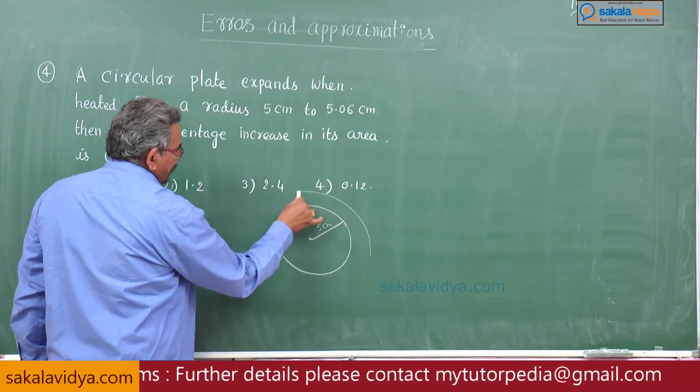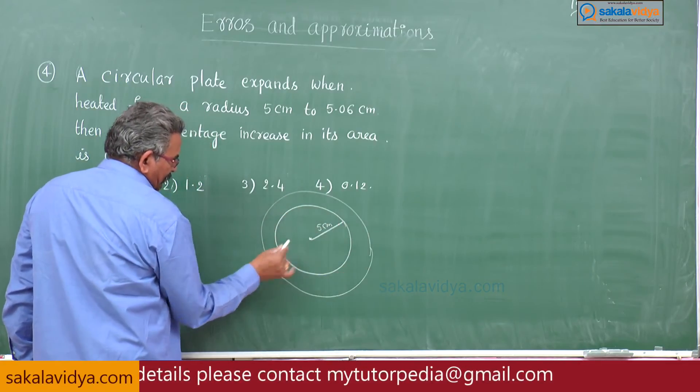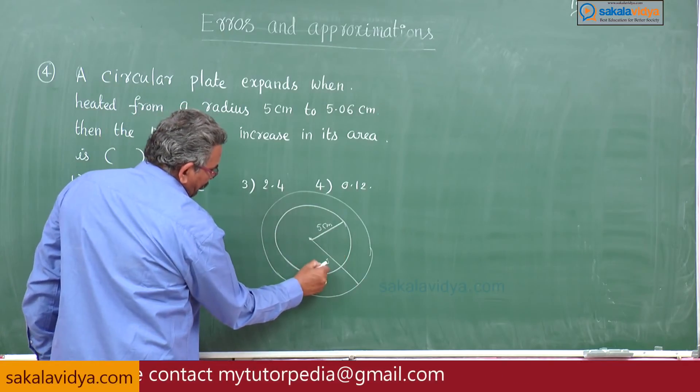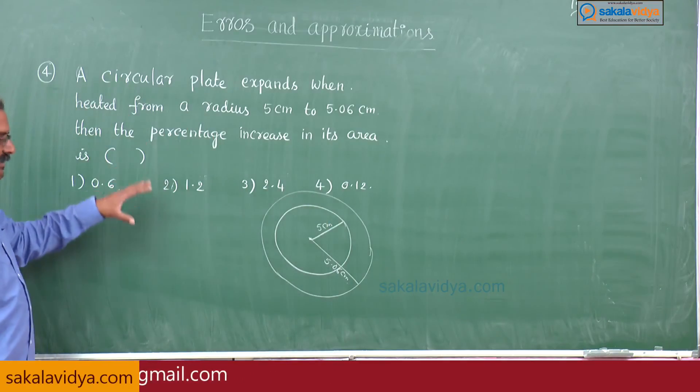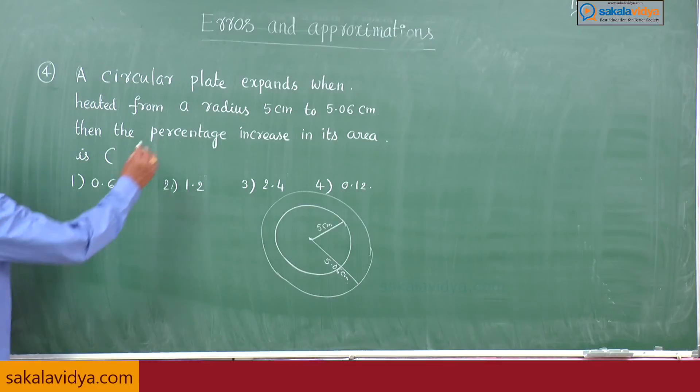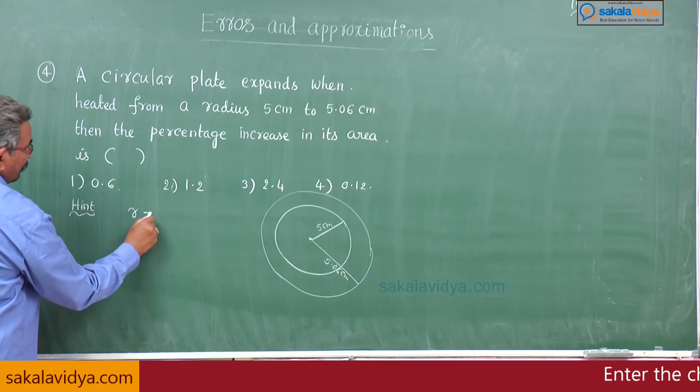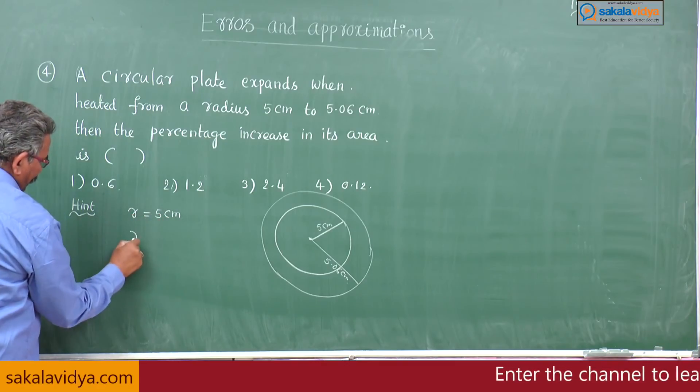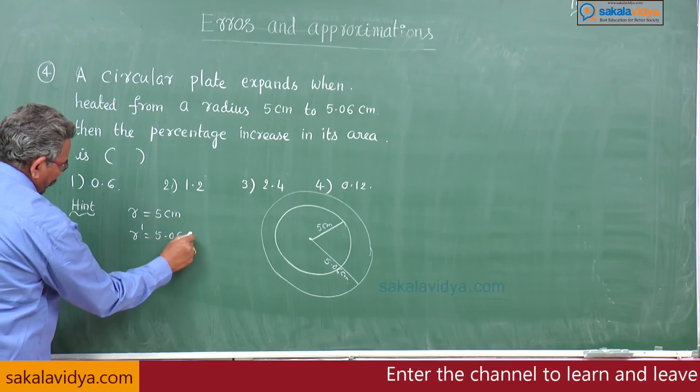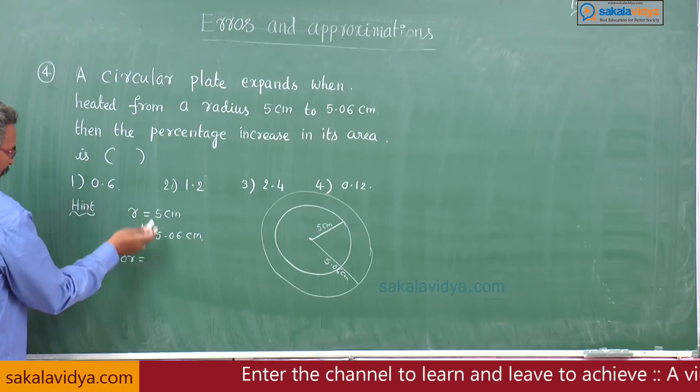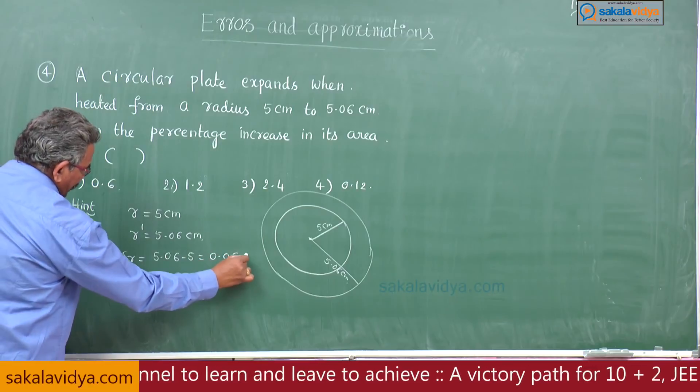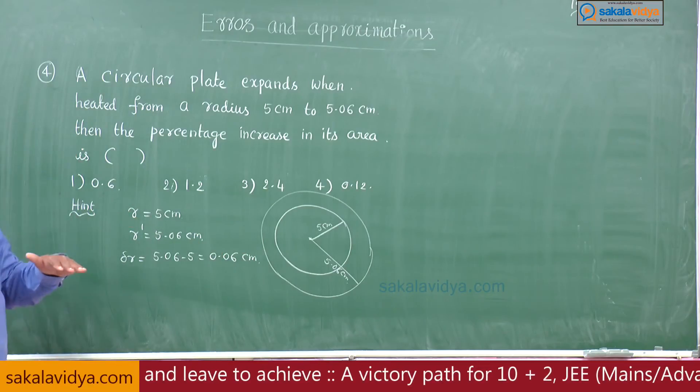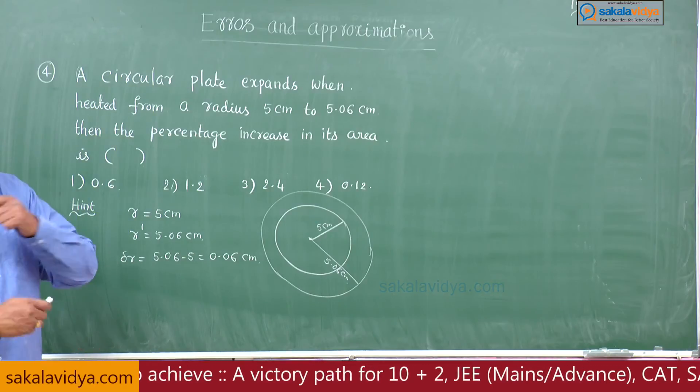Due to heating it is increased like this. Now radius becomes 5.06 centimeters. Percentage error increase in its area we have to find out. What is given here? r is equal to 5 centimeters, r dash is equal to 5.06 centimeters, delta r final minus initial, 5.06 minus 5, 0.06 centimeters. In this way we can calculate the error in the radius or increase in the radius.